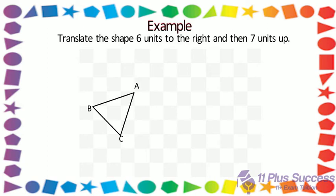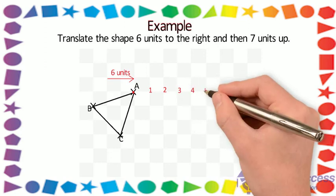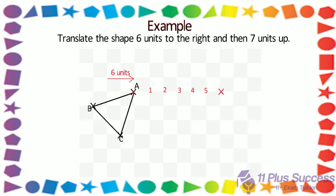Step 1: Translate or slide the shape 6 units to the right, meaning each corner point of the shape must move 6 units to the right. Step 2: Start counting from point A and move 6 units to the right and mark this point. Then start from point B and move 6 units to the right and mark the point. Step 3: Then start from point C and move 6 units to the right and mark the point.